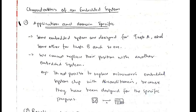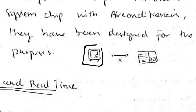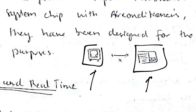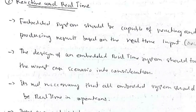The first characteristic is that embedded systems are application and domain specific. For example, consider a microwave and an air conditioner — both have embedded systems, but you can't exchange the embedded system of each, because it's defined for performing a particular task. So these are application and domain specific.